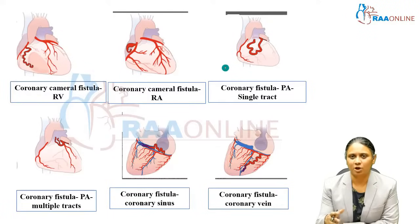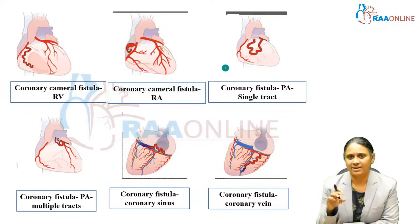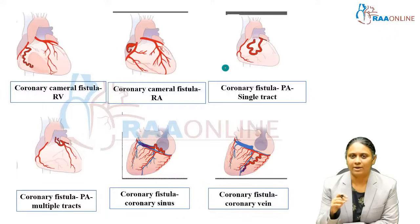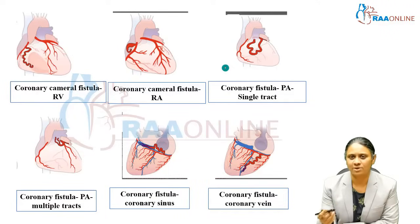The anatomic classification, which is not very commonly used, is based on whether the fistula originates from the proximal or distal portion of the vessel. The most common classification used is proximal or distal fistula. This is important because it provides a therapeutic advantage — the site of closure can be decided based on the origin of the fistula's tract.